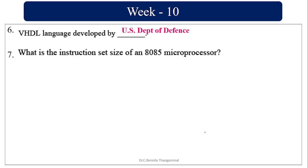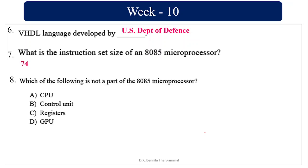What is the instruction set size of an 8085 microprocessor? It is 74. Which of the following is not a part of the 8085 microprocessor? GPU — because CPU, control unit, and registers are parts of a microprocessor.